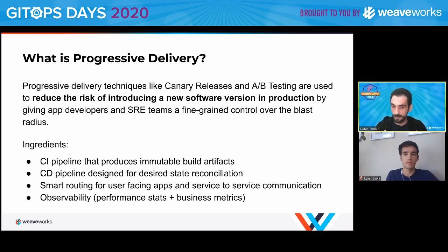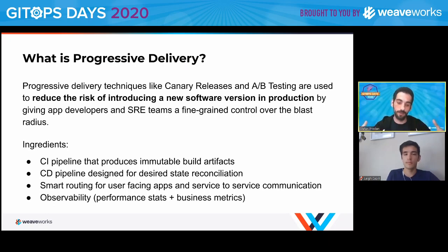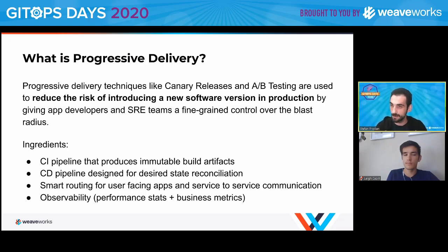The new ingredients on top of what GitOps needs for progressive delivery are smart routing — something inside your cluster that's more than just layer four routing, more than just a Kubernetes CNI implementation. Something that understands HTTP, gRPC, and layer seven protocol things, so you can look at requests and make decisions based on HTTP headers and similar information. And of course, you need some kind of observability for your system.